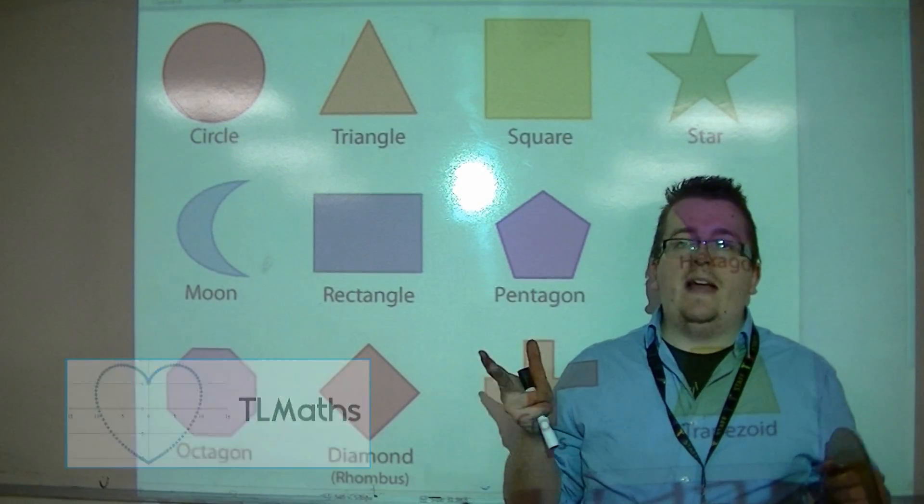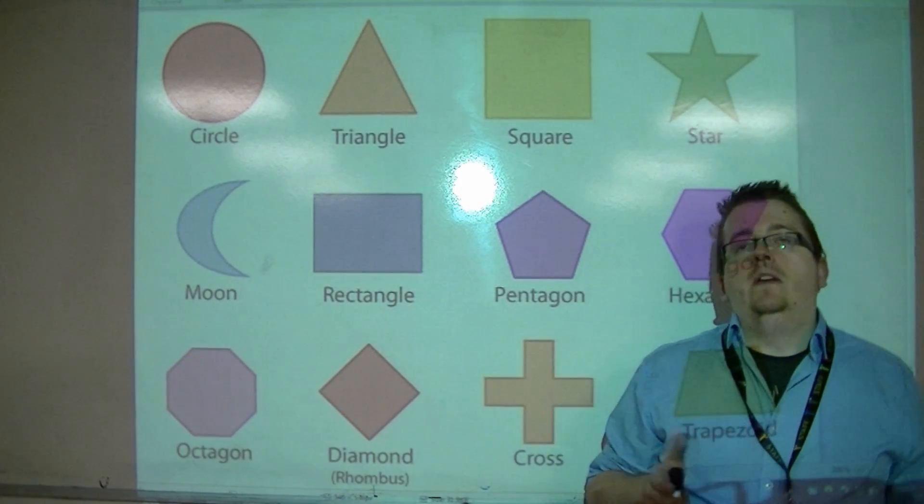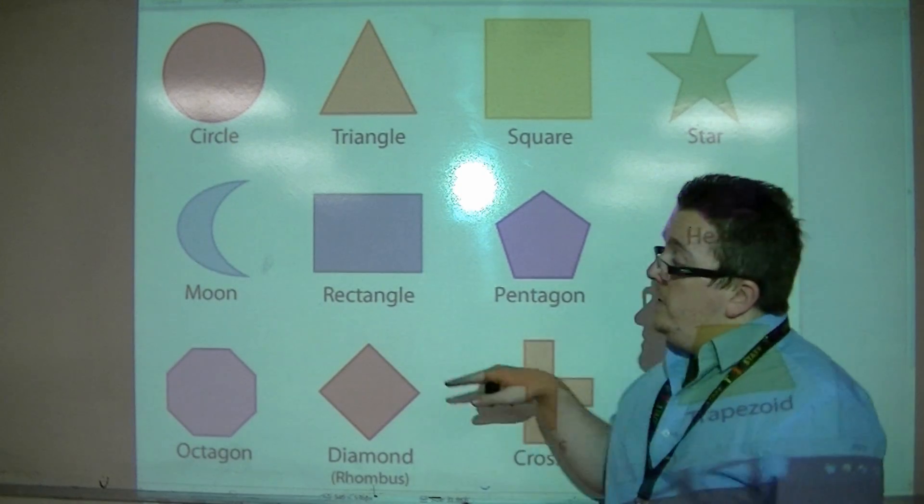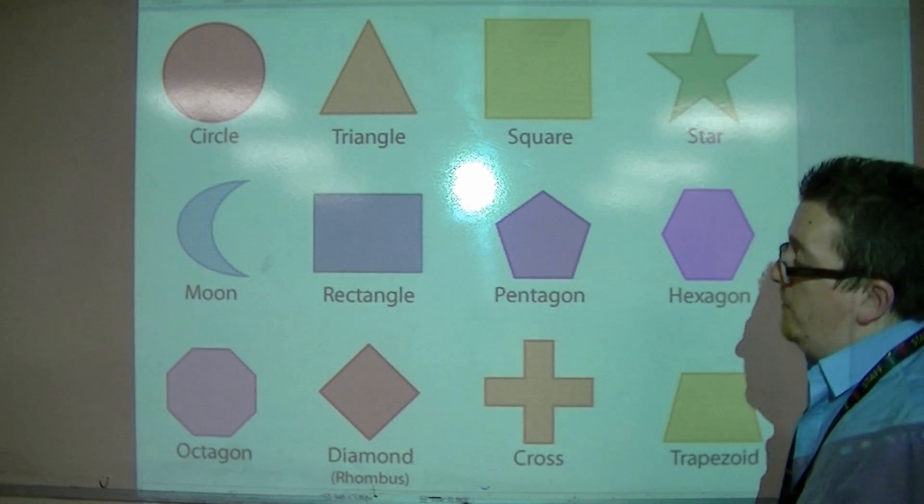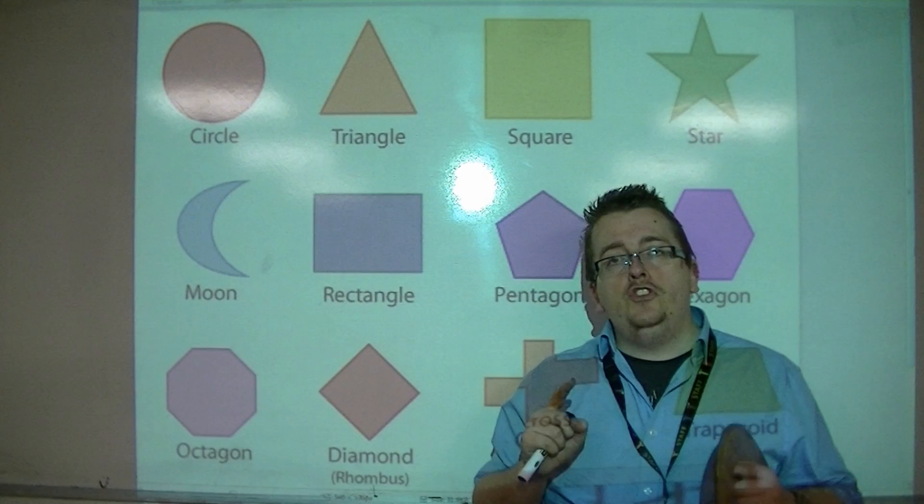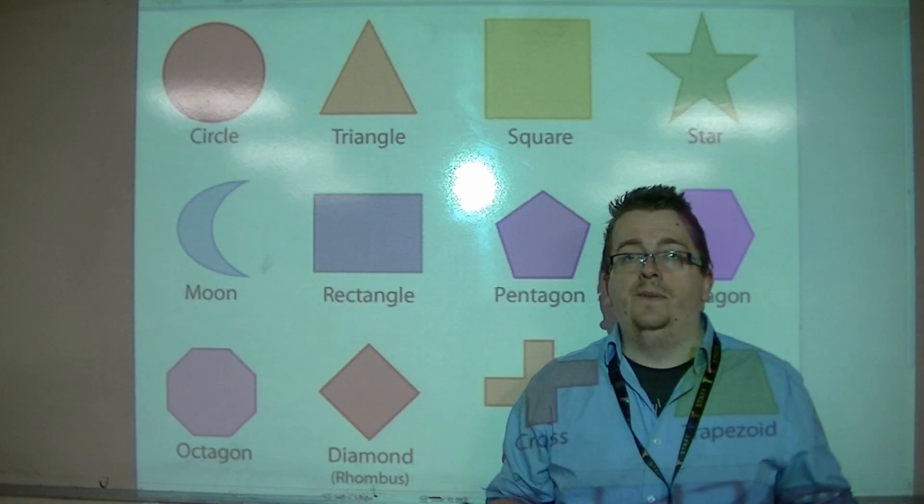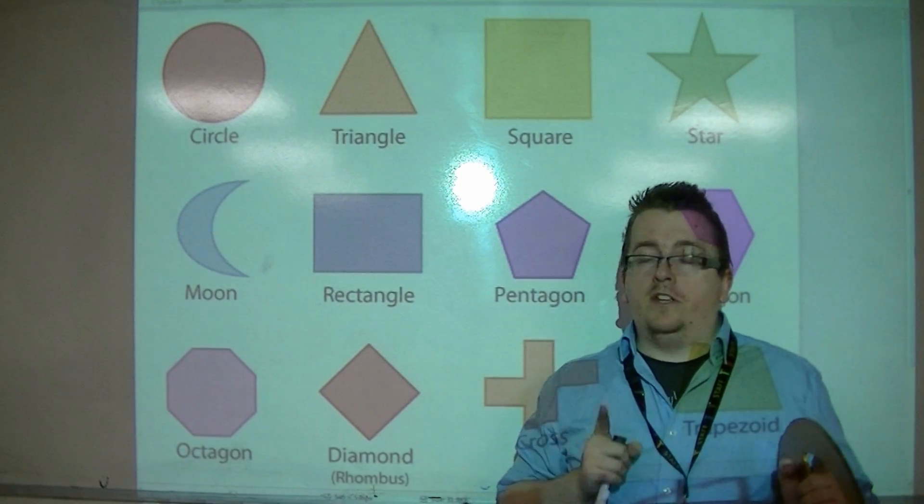In this video we're going to be looking at lines of symmetry. So a line of symmetry is a line that I can draw on one of these shapes, so that it doesn't just cut the shape in half, it's got to do that, it's got to cut the shape in half.